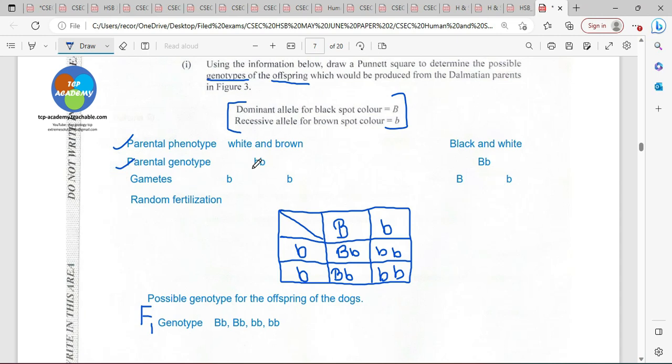We have parental genotype, which is going to be common bb for the homozygous recessive brown and white dog. And we have capital B, common b for the heterozygous dog, which is black and white. Then we come down to the gametes and we are going to just be separating here the chromosomes or the alleles, separating them here, separating them here to represent the gametes. Then we are going to end up with what we call random fertilization.